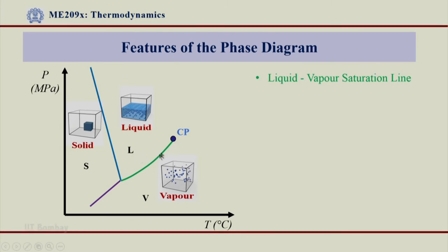On this line we got liquid and vapor in equilibrium or coexisting together and that is why we say it is a liquid vapor saturation line. Many times also referred as LV saturation line or LV line.